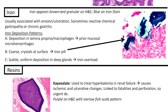Next up we've got iron. Iron appears brown and granular on H&E and blue on the iron stain. Iron is usually associated with erosion or ulceration and sometimes reactive chemical gastropathy or chronic gastritis. Iron deposition patterns include deposition in the lamina propria or macrophages from prior mucosal microhemorrhages, coarse crystals at the surface from an iron pill, or subtle uniform deposition in the deep glands from iron overload.